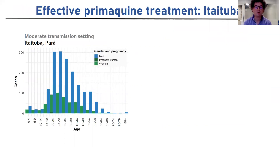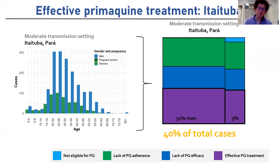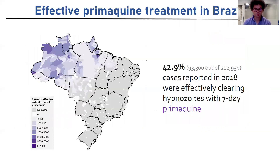Turning to our medium transmission setting in Pará, looking at the age and gender distribution of cases we see very few cases in children and many cases in adult men of working age. Applying the same treatment pathway method and making a treemap, we can see that there are many more cases in men, and again we estimate that only 40% of cases receive effective primaquine treatment. Doing this analysis for every municipality in Brazil, in total we estimate that only 43% of cases in 2018 were effectively treated with radical cure.